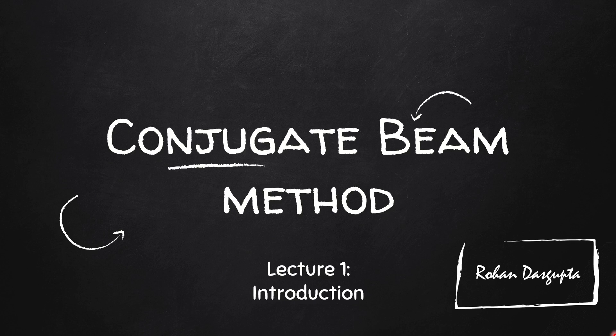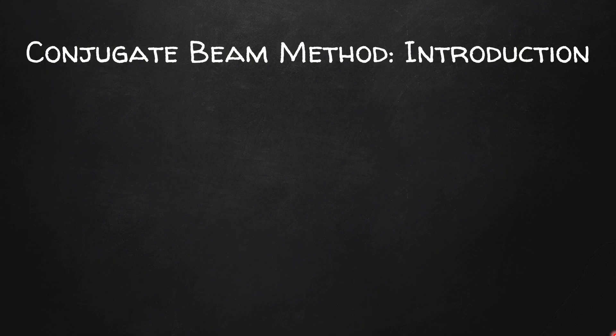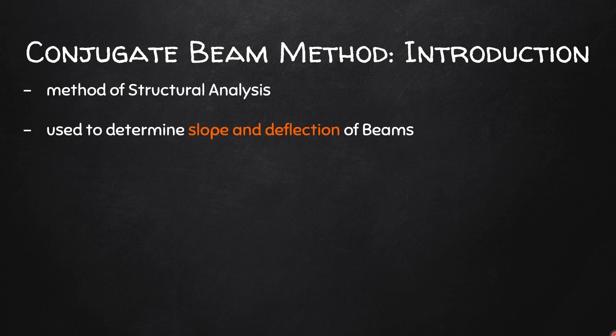Hello everyone, this is Rohan and in this video I am going to give you an introduction to conjugate beam method. Conjugate beam method is a method of structural analysis which is used to determine the slopes and deflections of beams. When we solve a problem using conjugate beam method, ultimately we are trying to find out the slope and deflections at various points of a beam.